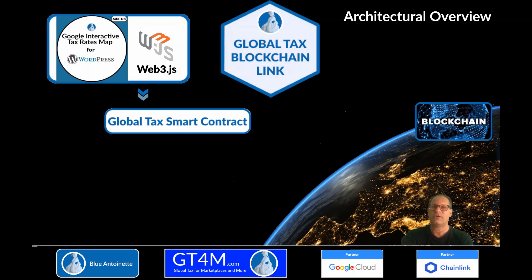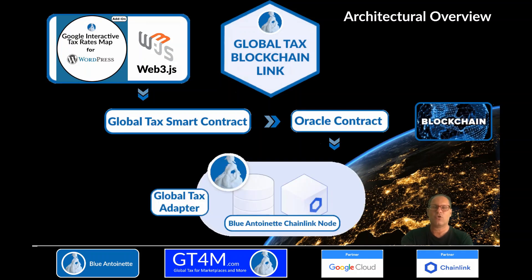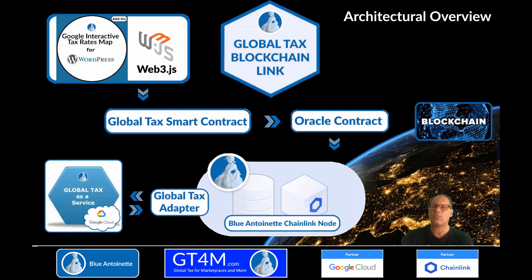Internally, the Global Tax smart contract sends this request for off-chain data to an Oracle contract, which invokes the Global Tax Adapter on the Blue Internet Chainlink node. The Global Tax Adapter, in turn, requests and receives the tax rates from Global Tax as a Service, which is a REST API in the Google Cloud. Finally, the Blue Internet Chainlink node sends back the requested tax rates to the Global Tax smart contract, which makes them available as events for the subscribed Web3GS client.